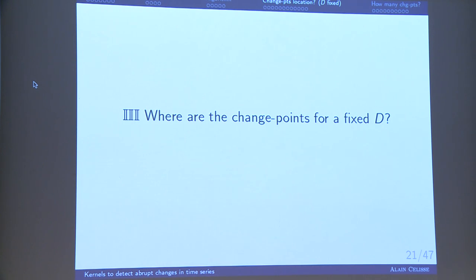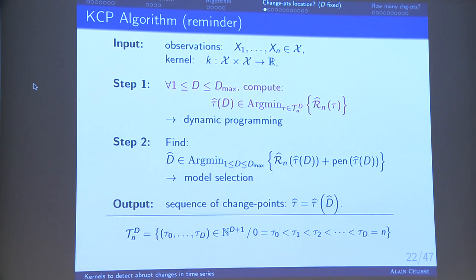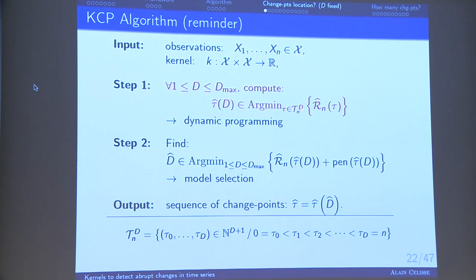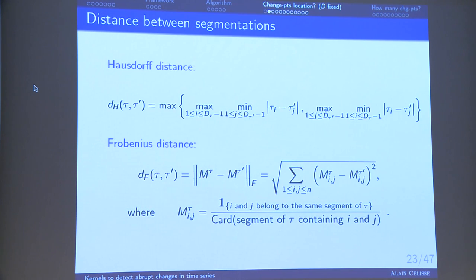Now let us talk about the statistical performance of step one of the algorithm. For each number of segments D, we use dynamic programming to compute the best segmentation with D segments by minimizing the criterion. What is the statistical performance of this procedure? To compare the quality of segmentations, we introduce two distances between segmentations.